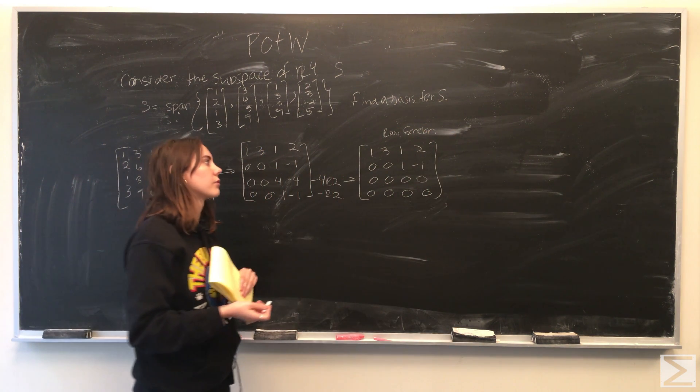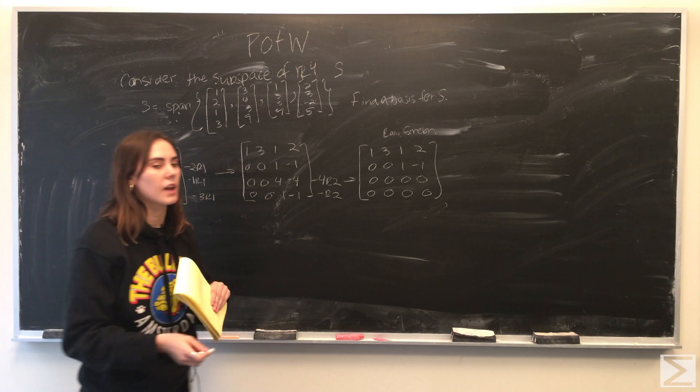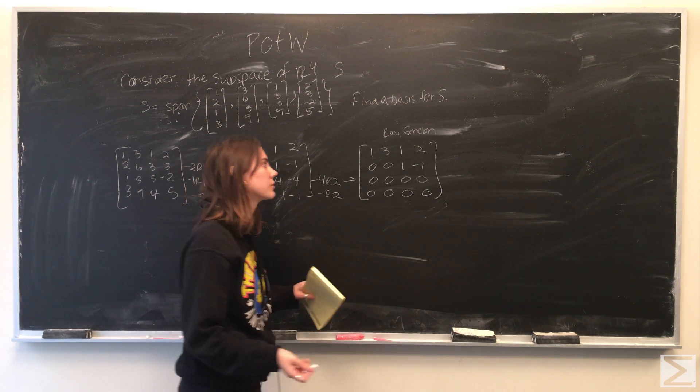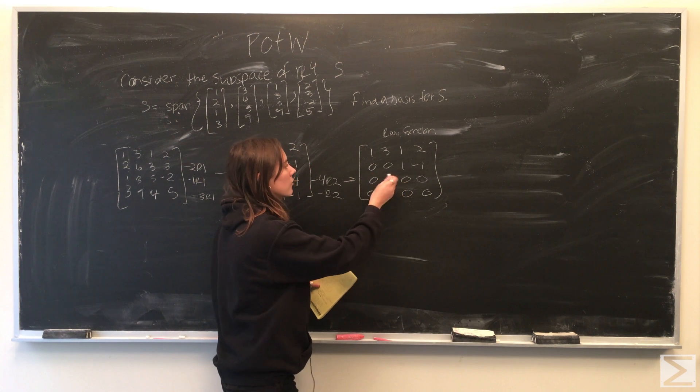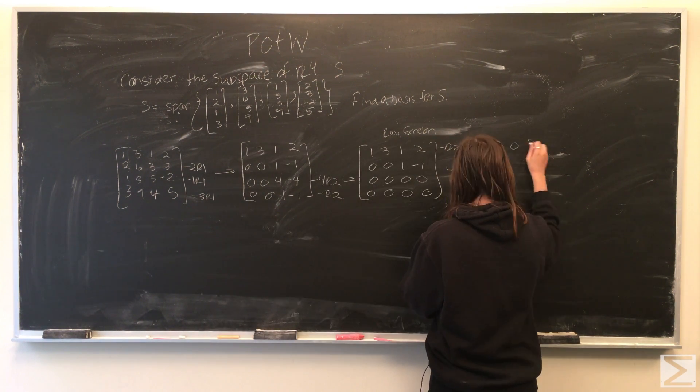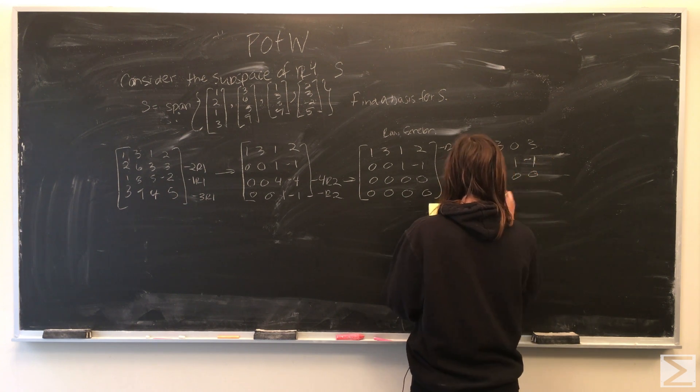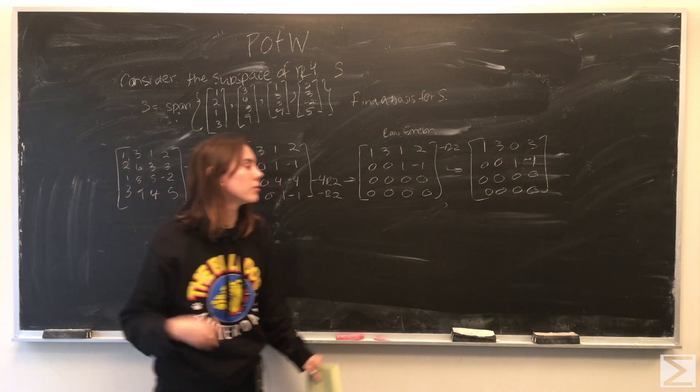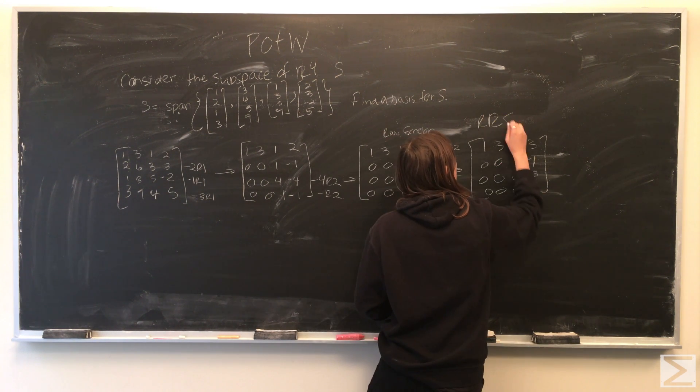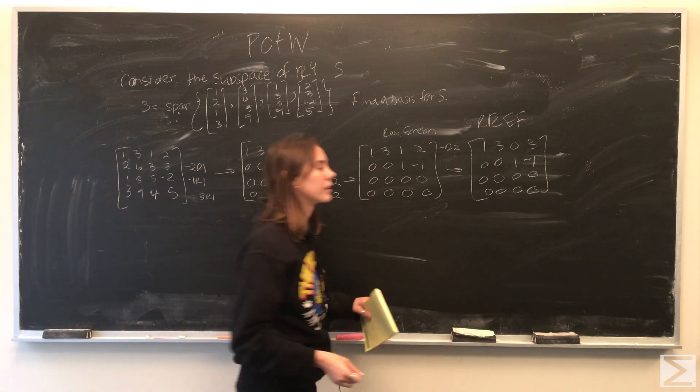So what we come out with is [1,3,1,2], [1,-1], and that's actually the row echelon form of the matrix. We can take one final step to get to reduced row echelon form, which is just subtracting the row [1,-1] from the first row. So now we have the reduced row echelon form of the matrix, or the RREF.